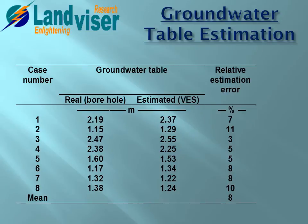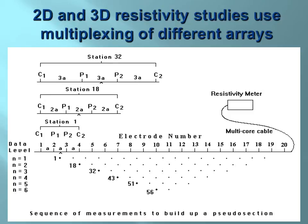This is a fairly accurate method — if you don't want to drill a borehole to find the groundwater table in the first couple of meters, we get about 8% error compared to real borehole data. Vertical electrical sounding is quick to perform, requiring about 15 measurements at one spot.